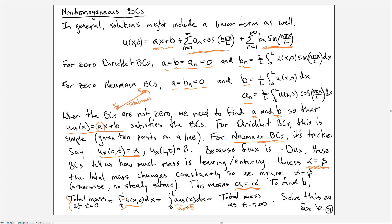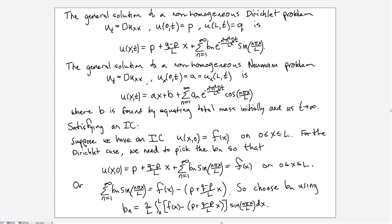Let's summarize what we've got so far. The general solution to a non-homogeneous Dirichlet problem, the diffusion equation with the value of u at 0 specified as p and the value of u at L specified as q, the solution will be the steady state, which satisfies...